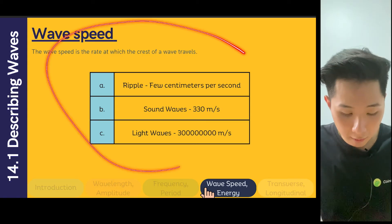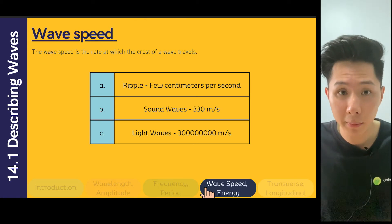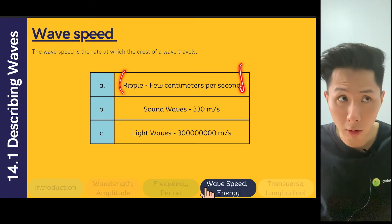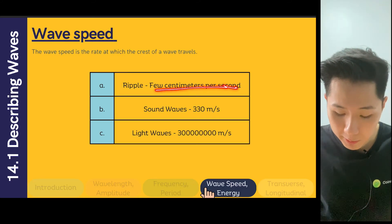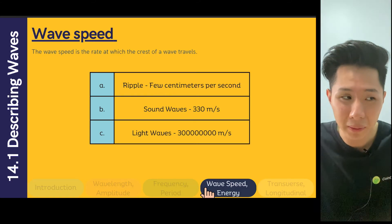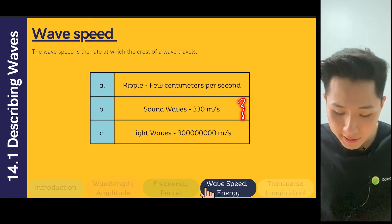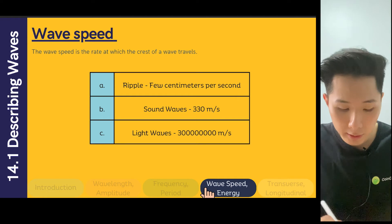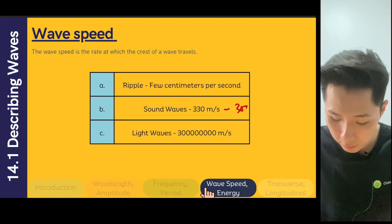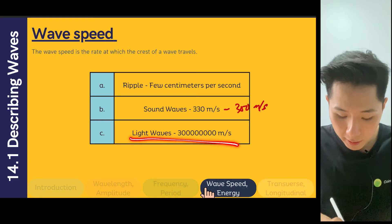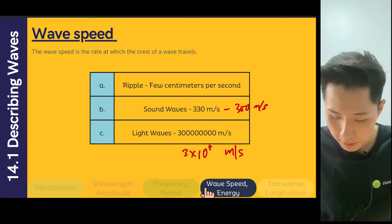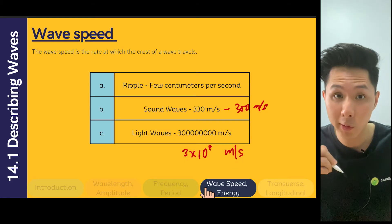Let's look at some important facts about how fast waves move. For ripples from a ripple tank or even in the ocean, it's a few centimeters per second, but it varies according to the size of the wave. Sound waves travel at around 330 to 350 meters per second. Light waves are the fastest, traveling at 3 × 10⁸ meters per second — they can travel that distance in just one second.